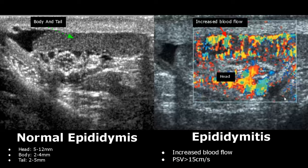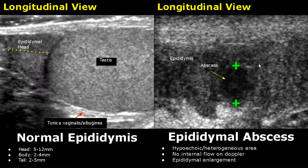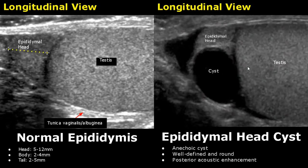In an epididymal abscess there will be a hypoechoic or heterogeneous area with absence of any internal blood flow on Doppler, and the epididymis will be enlarged. Epididymal head cyst is seen as an anechoic, well-defined round cyst in the epididymal head with posterior acoustic enhancement.